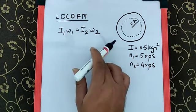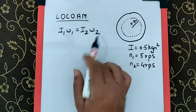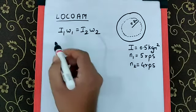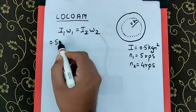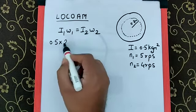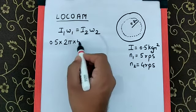Omega 1 is the initial angular velocity and omega 2 is the final angular velocity, which means I1 is going to be I, which is 0.5. Omega 1 is going to be 2 pi N1, so it is going to be 2 pi into N1 as 5.